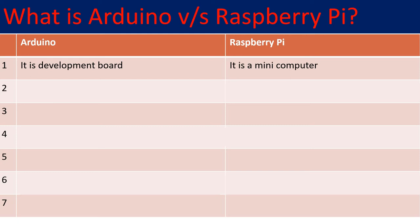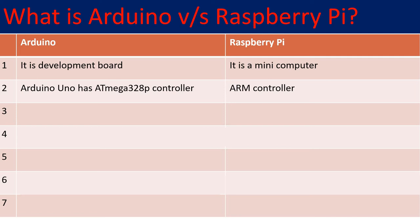The next key difference is that Arduino Uno has a microcontroller inside — the ATmega328P — whereas Raspberry Pi makes use of an ARM processor. Arduino Uno is an 8-bit microcontroller, with the ATmega328P being an 8-bit device, whereas the ARM processor that Raspberry Pi uses is 64-bit.